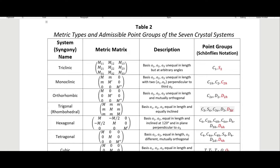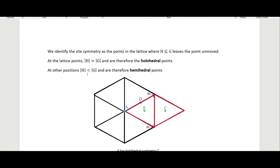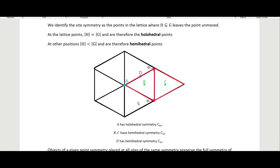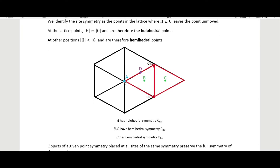We can identify the site symmetry as the points in the lattice where the symmetry operations in H, which are a subgroup of G, leave the point unmoved. At the lattice points, like point a in this image, the number of symmetry operations will equal the holohedral number. But at other positions we get hemihedral points. So at a we have the holohedral C6v, but if we place an object at b or c we move down to C3v, which is the hemihedry of C6v, and placing one at d gives us C2v.